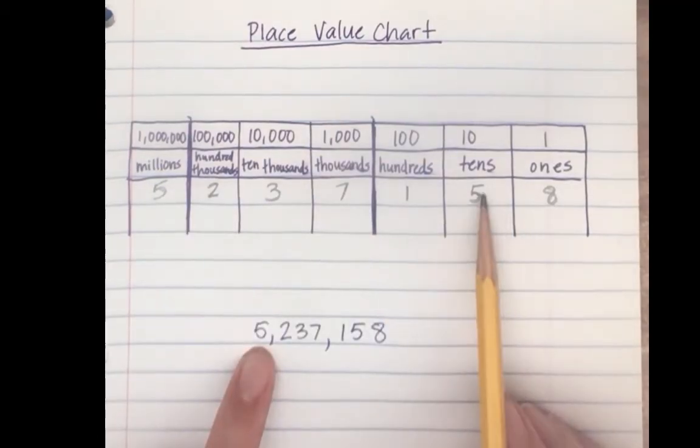So we have eight ones, five tens which equals fifty, and one hundred which equals one hundred.